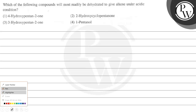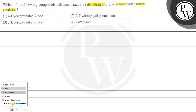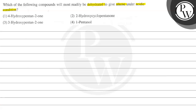Let's read this question. The question says: which of the following compounds will most readily be dehydrated to give an alkene under acidic conditions? We have four options here. The key concept is dehydration reactions.